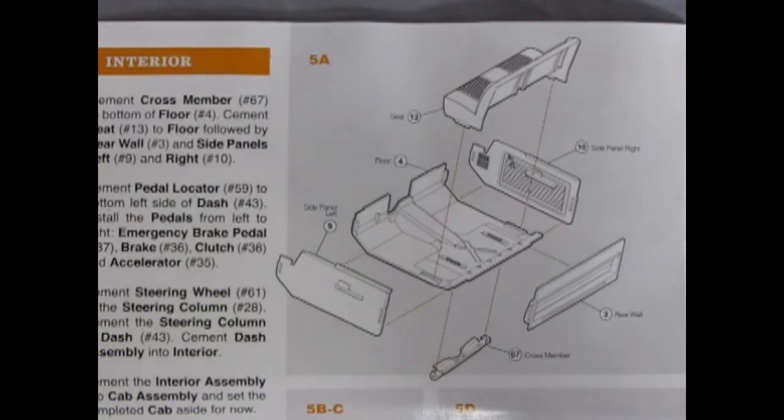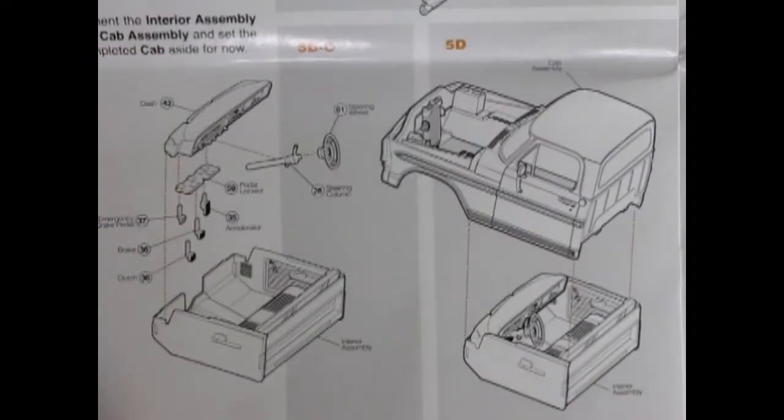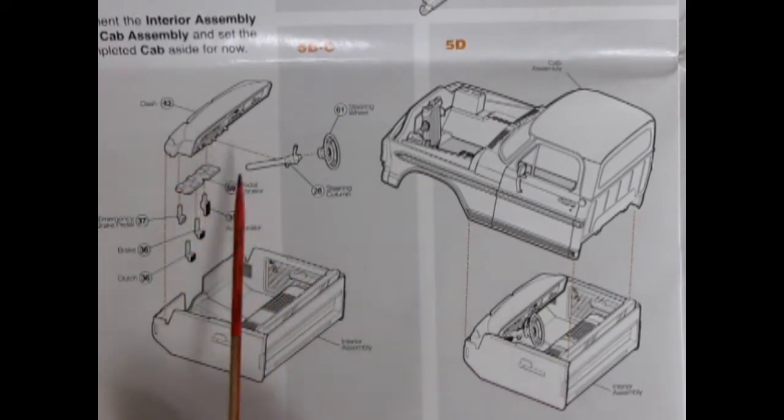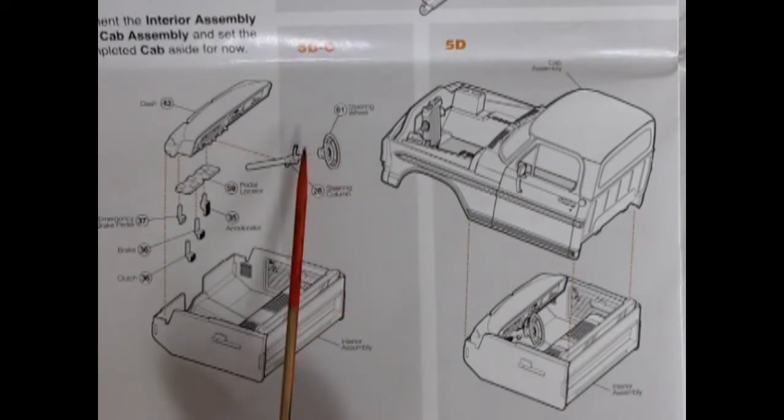The interior is a nice multi-piece affair with a bench seat, two side panels, a nice floor, the rear wall and a cross member. Finishing off our interior assembly is the dashboard, the pedal cluster which includes the accelerator, the brake, the clutch and the emergency brake pedal, all gluing up onto this pedal locator, all gluing up under the dash. We also have our steering column and our steering wheel.